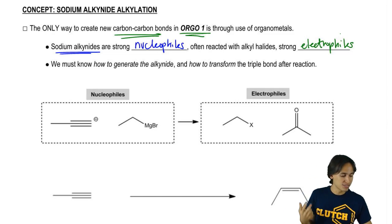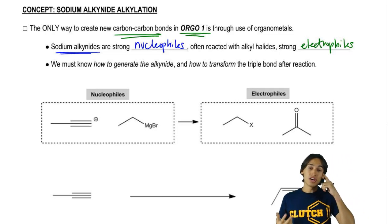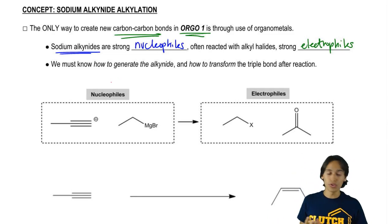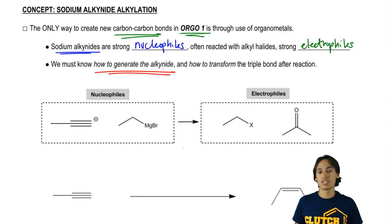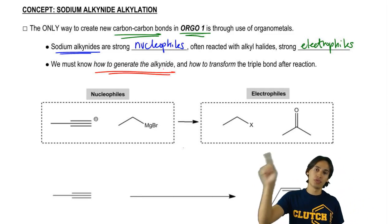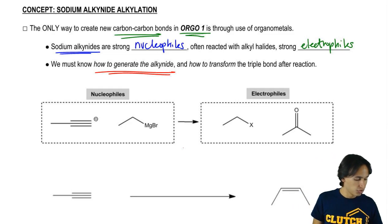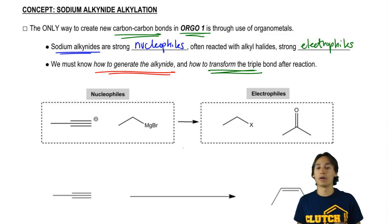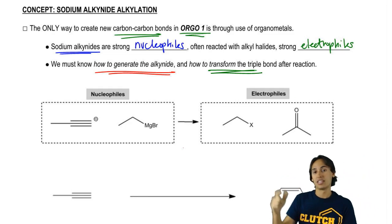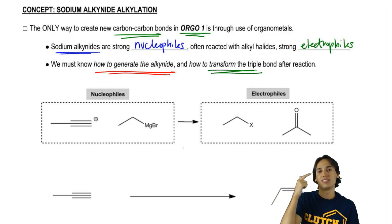But for sodium alkanides, we're not just going to need to know that it's a nucleophile reacting with an electrophile. We're going to need to know a few more things: how to generate the alkanides, that means alkanide synthesis, making it from scratch. Also, after you've done your reaction, you need to know how to transform the triple bond afterwards. So there's a lot to know here. We need to know how to make the alkanide, then how to use it, and then how to do different things to it.